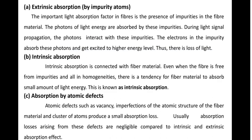Extrinsic absorption occurs due to impurity atoms present in the material. Because of these impurities, some light signal photons are absorbed, resulting in a loss of light. Intrinsic absorption is due to the fiber material itself — the glass or plastic material can absorb a small amount of energy, and that is called intrinsic absorption.